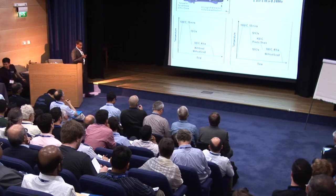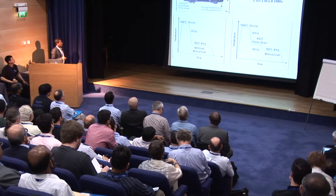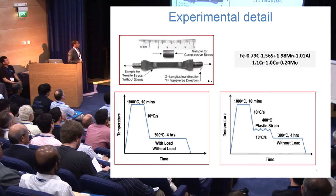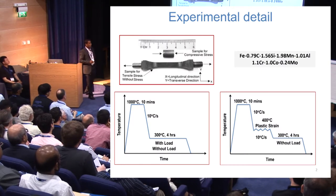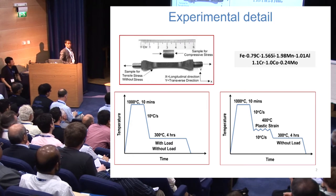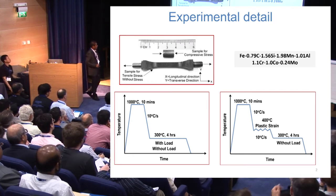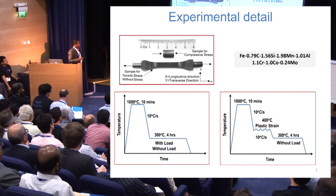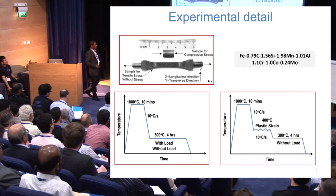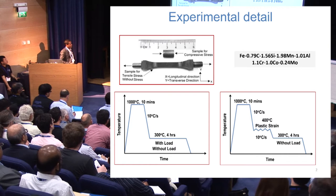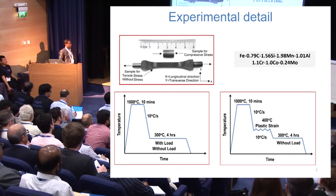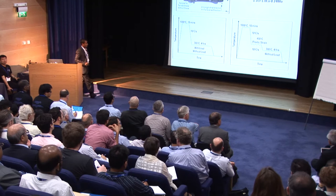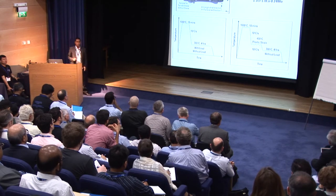We did two kinds of experiments. One, we induced martensitic transformation in super bainitic steel at 300 degrees Celsius with or without load — using both compression and tensile load. The other one involved inducing bainitic transformation after plastically deforming the austenite at 400 degrees Celsius, then unloading the specimen and allowing transformation at 300 degrees Celsius. So these are the two kinds: stress-induced, no stress, and strain-induced.